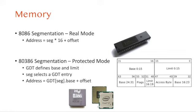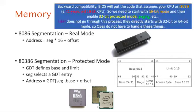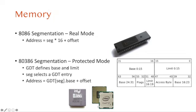Because in this mode we can only access 1 megabyte of memory, which is too small for this era, to use the full 4 gigabytes of virtual memory space we enabled protected mode. In protected mode, the Global Descriptor Table (GDT) defines a base and limit, and the segment register is used for selecting one of the entries in the GDT. The addressing in protected mode segmentation will be base plus offset, if the offset is smaller than the limit.